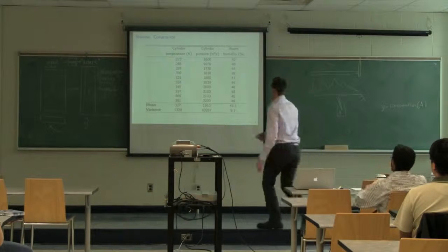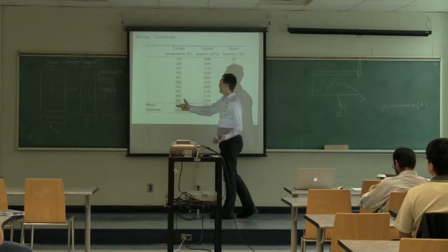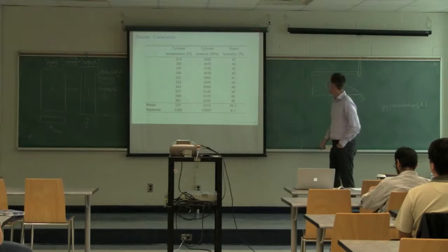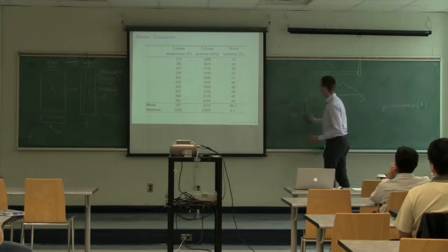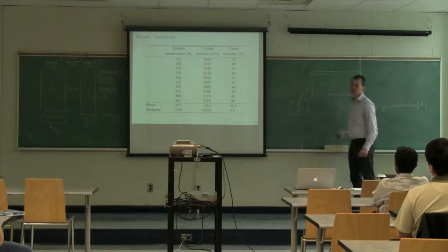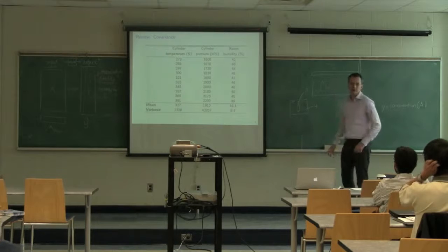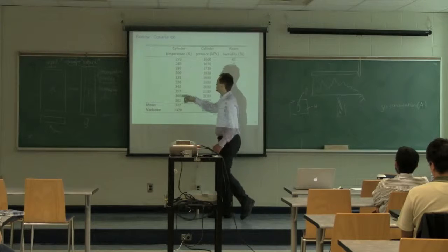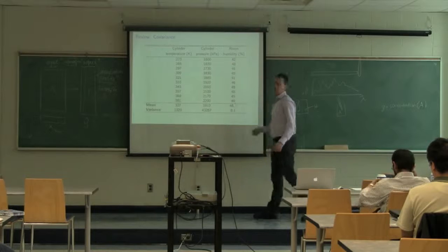Covariance: let's imagine I've got a gas cylinder and I've got the temperature measured in the room and I'm measuring the pressure inside the cylinder. There's a room with a certain temperature, a gas cylinder where I can measure pressure, and I can also measure the humidity. The room's temperature changes by a certain amount and I read corresponding pressure and humidity values.